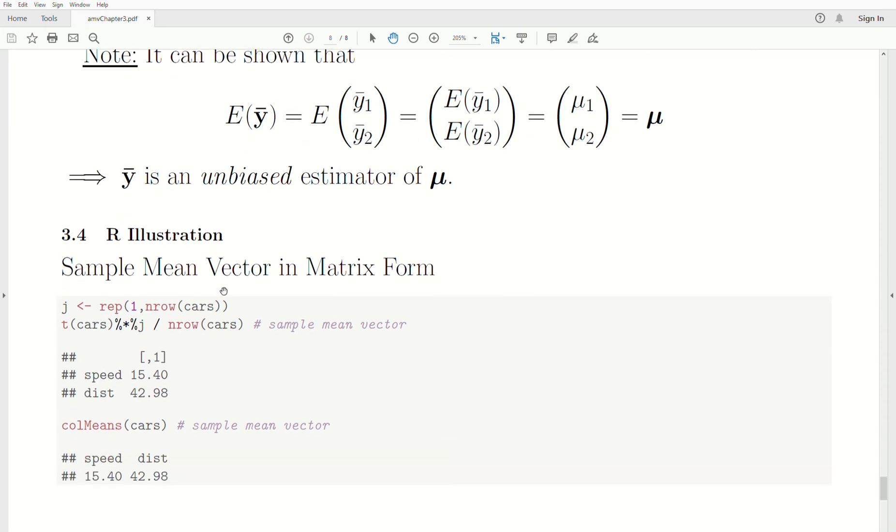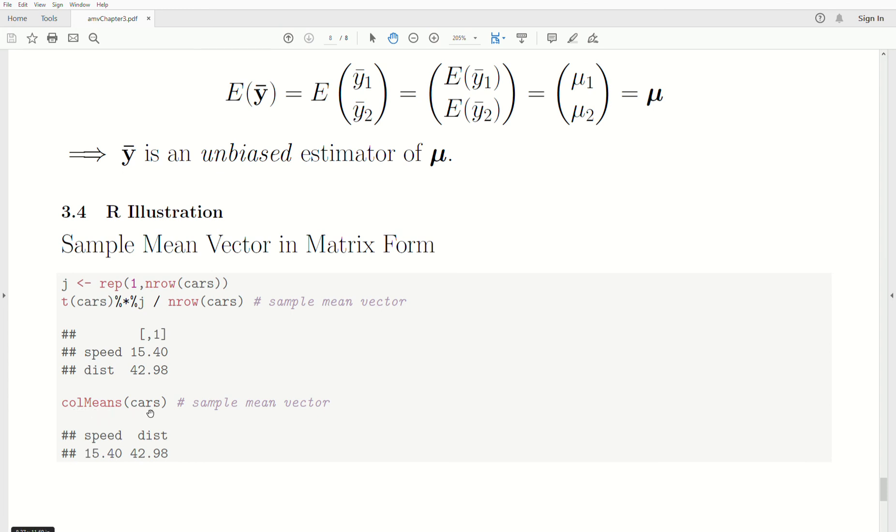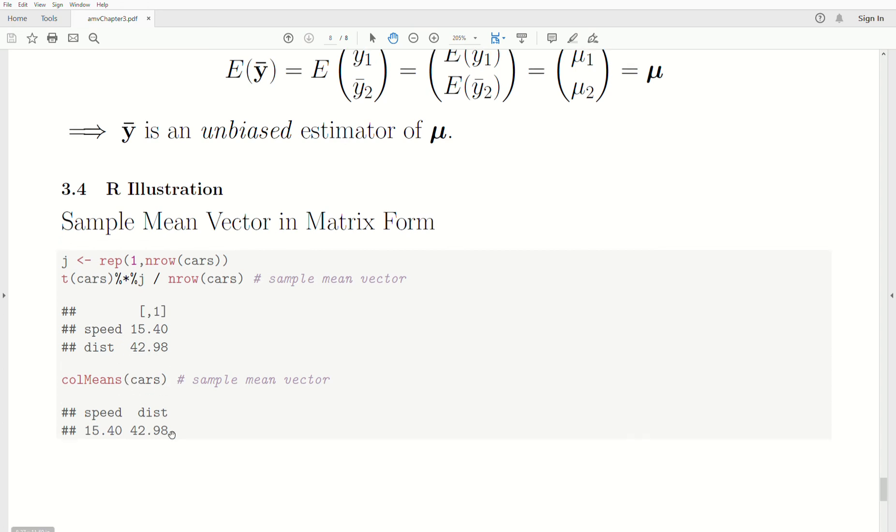A very quick illustration of how to calculate this in R. First we create a vector of ones, rep one, however many rows there are in cars. We know there's 50, so it's going to put 50 ones into j. What you do is take the transpose of our data matrix times j, and look what it prints out: 15.4, 42.97. But if we were just to take the column means of cars, notice it's the same. This is matrix form, and this is just taking the mean of each column.